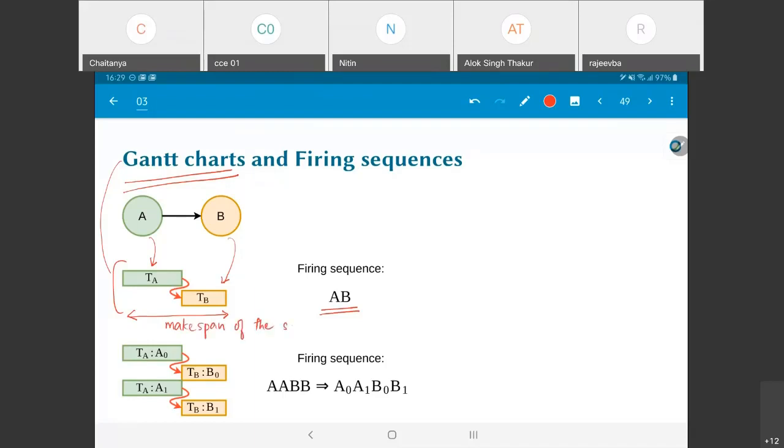In other words, what I am saying is that this sequence that I have drawn over here, A followed by B is a form of schedule. Effectively, it is telling you the sequence in which the different jobs or different tasks need to operate. And the make span is the total amount of time required in order to complete an entire set.